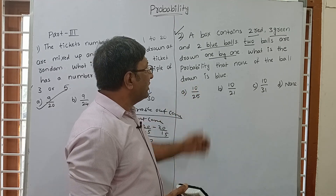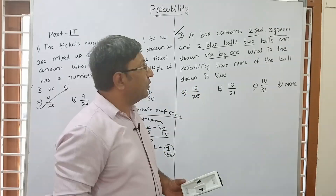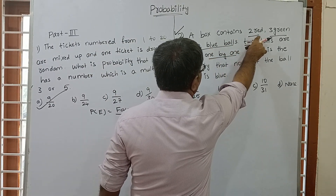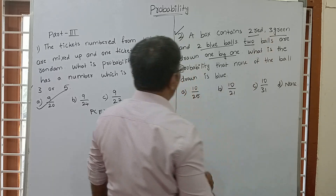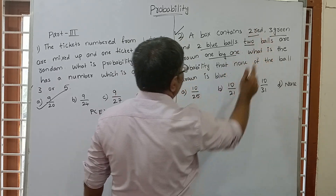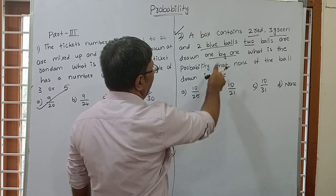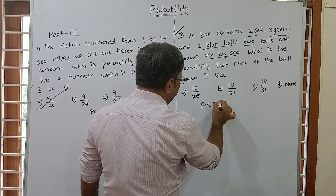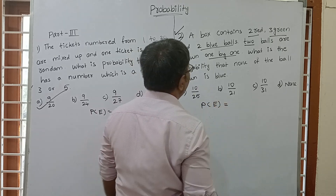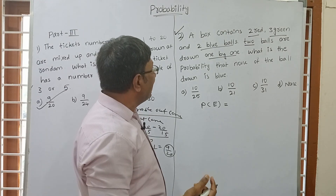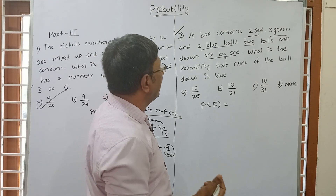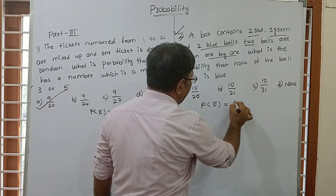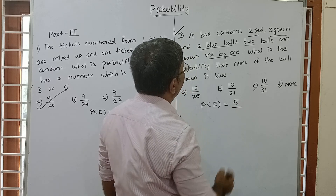2 balls are drawn one by one. What is the probability that none of the balls drawn is blue? We ignore the blue balls. The non-blue balls are 3 green plus 2 red, which is 5. Probability of the first ball being non-blue: 5 out of 7.